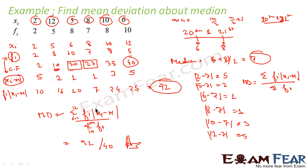The formula was sigma of fi into xi minus m, that is the distance, divided by sigma fi, where i varies from 1 to 12. We put the values and we got the answer as 92 by 40. Thank you.